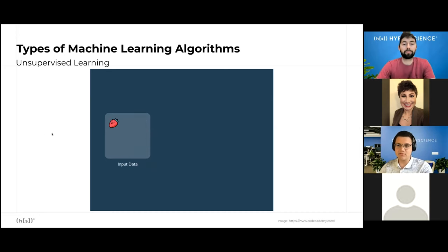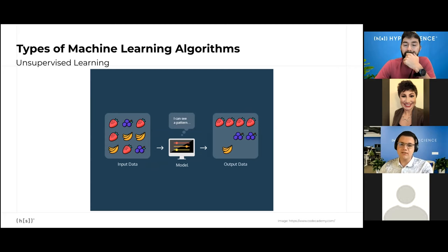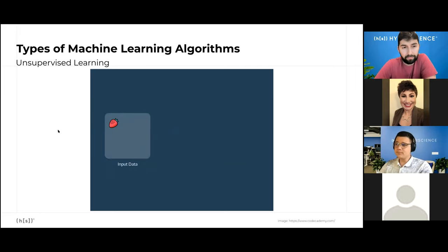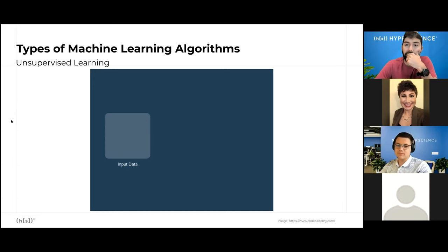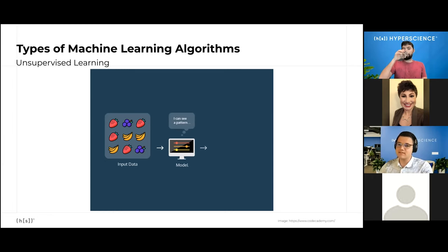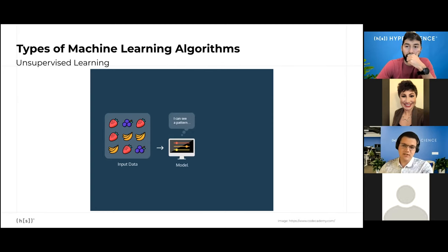But clean and perfectly labeled datasets aren't easy to come by because they're hard to make. They have to be annotated by humans most often. And sometimes engineers are asking the algorithm questions that they don't know the answer to. That's where unsupervised learning comes in. In unsupervised learning, the model is handed a dataset without explicit instructions on what to do with it.